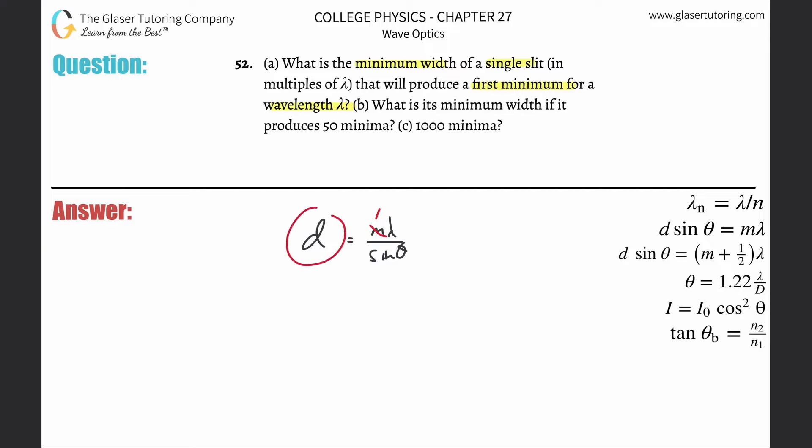Okay, now we said we want to find a minimum width for d. So we got to produce a minimum d, which means we got to maximize the denominator.